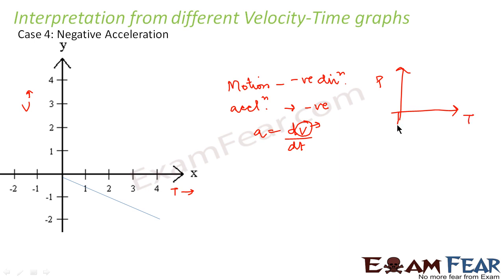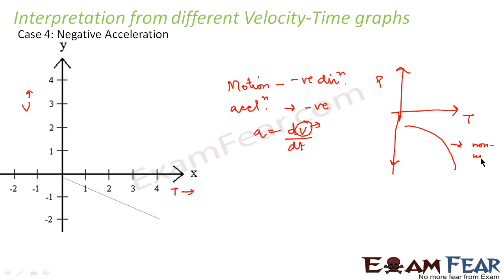If we try to plot the corresponding position-time graph, this is position and this is time. The position-time graph would be in the negative coordinate because the velocity goes in the negative coordinate. With increase in time, the absolute value of velocity keeps increasing along the negative y-axis, so the value of position should also keep increasing along the negative y-axis. Since velocity keeps increasing with time, the curve represents a non-uniform change in position with time. So I hope it is now clear how we plot different velocity-time graphs, what we interpret from them, and how we plot the corresponding position-time graphs.